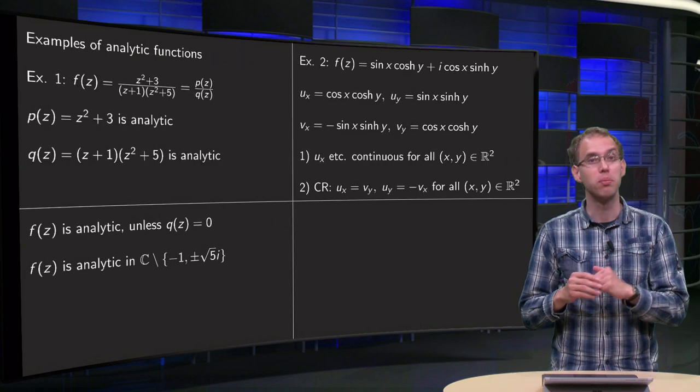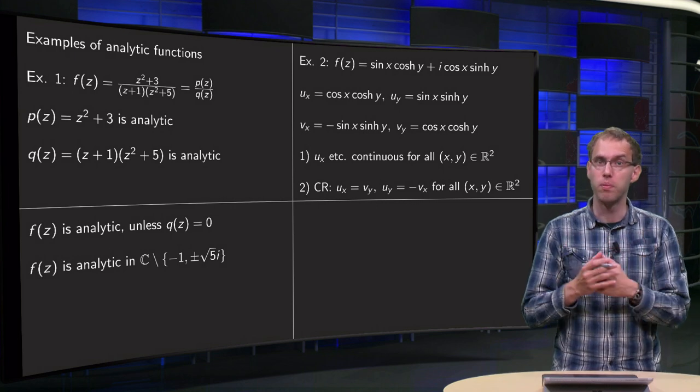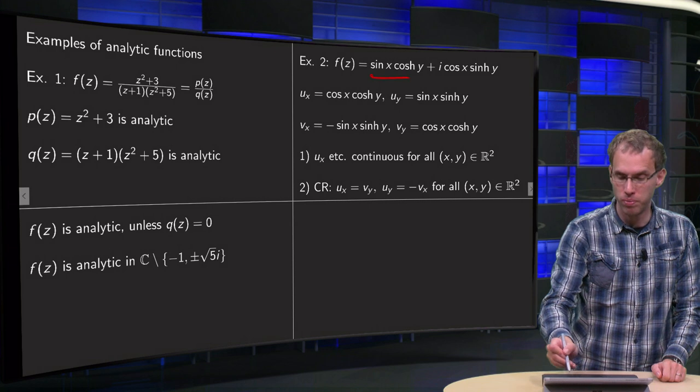An example using Cauchy-Riemann equations—that is usually better if you have your f in terms of u and v, because then you can easily compute ux.